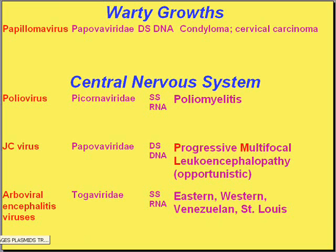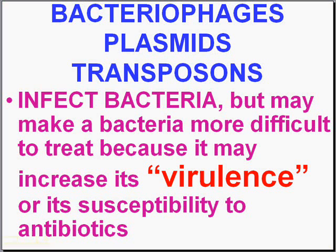It wouldn't be fair not to mention another type of virus that does not affect humans directly, but generally affects bacteria. Viruses like bacteriophages, plasmids, and transposons infecting bacteria may change the bacteria's type of virulence with respect to humans. You can't say these viruses infect man directly, but they infect bacteria which infect man and may increase or even decrease virulence or susceptibility to antibiotics. That's worth an honorable mention.